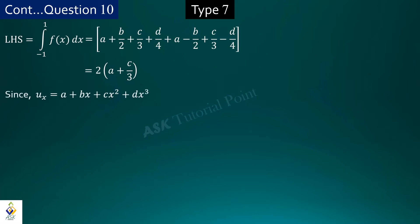Since fx is equal to a plus bx plus cx square plus dx cube, we substitute in the right hand side terms by placing x equal to 1, minus 1, 3, and minus 3. After simplifying we get this result.